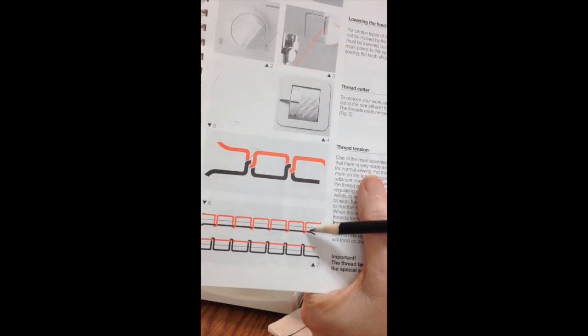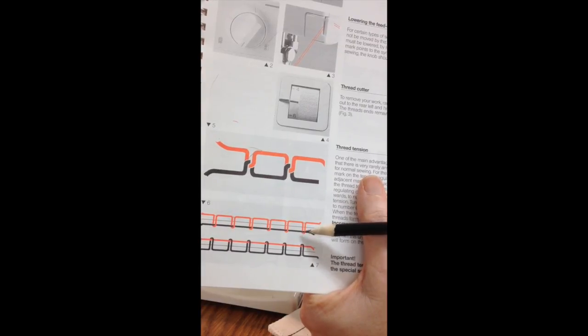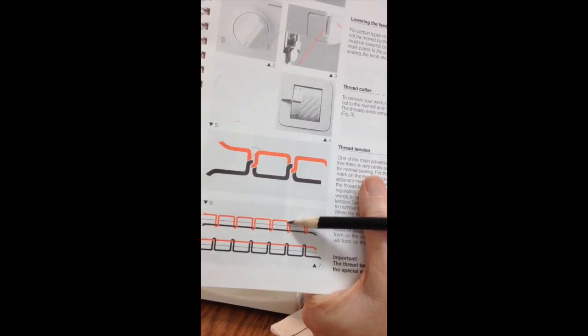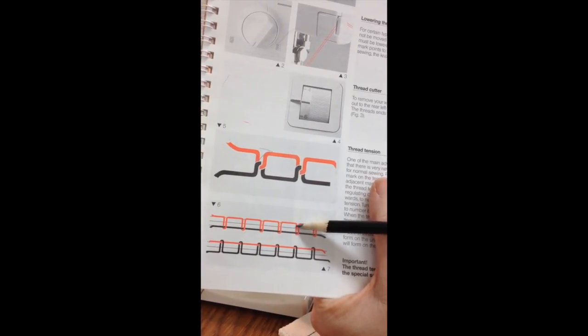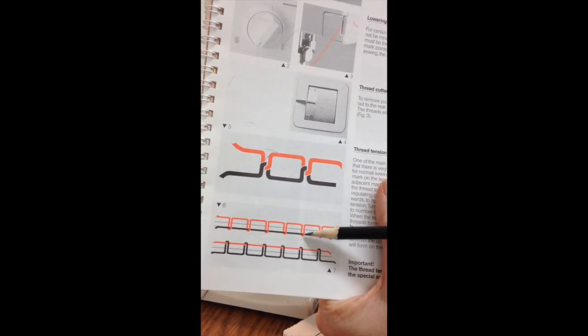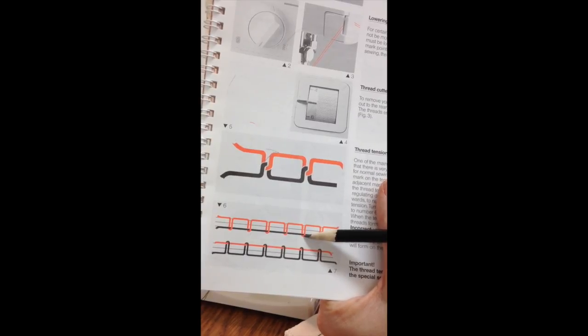This diagram shows incorrect tension. The red line, the upper thread, is too loose and so it's going all the way through the fabric and showing as a bump on the bottom.